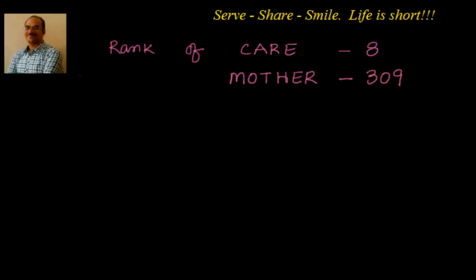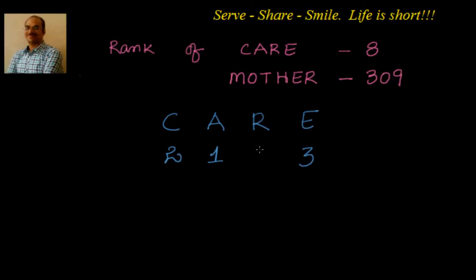To start with, let us try to find out the rank of 'CARE' in shortcut method. First we'll write down the word: C, A, R, E. Then we will give them rankings according to their alphabetical order. In alphabetical order, A is 1, C is 2, E is 3, and R is 4. So we have ranked the alphabets A, C, R, E according to the ranks 1, 2, 3, 4.